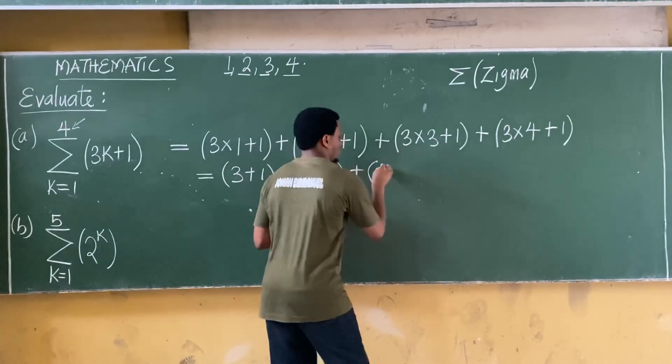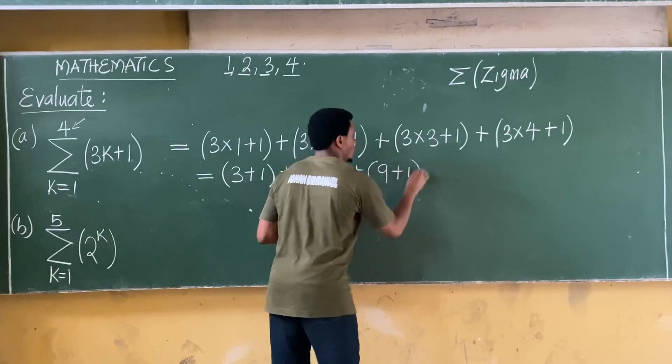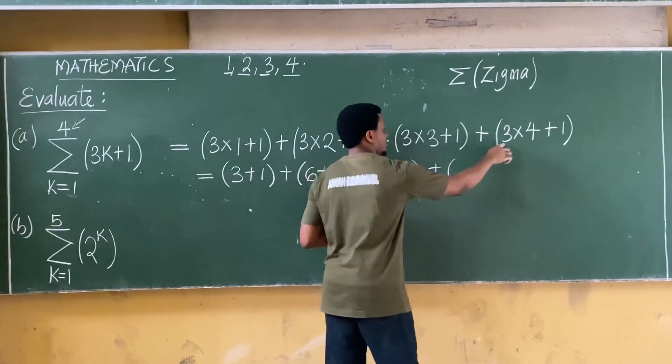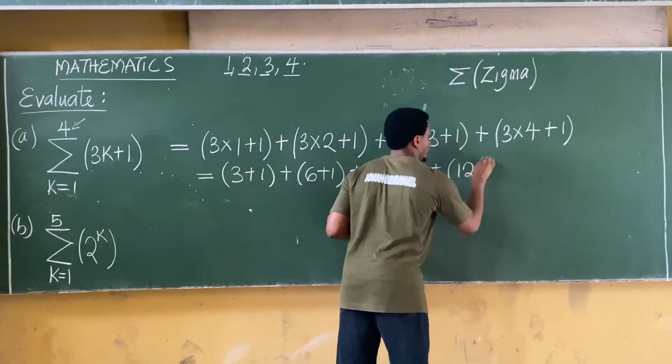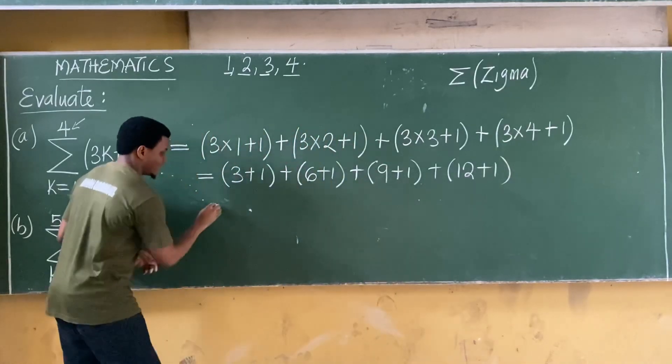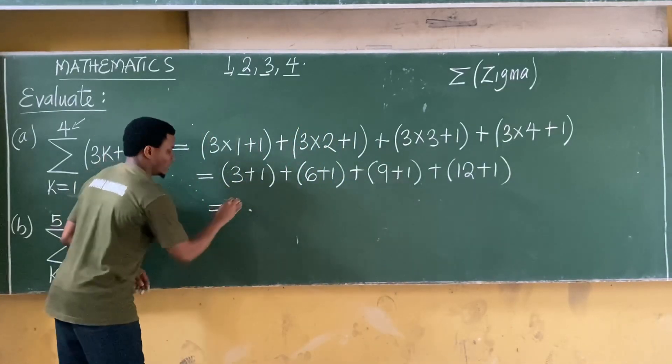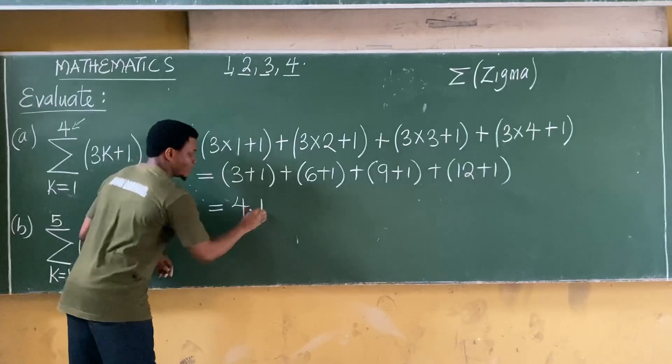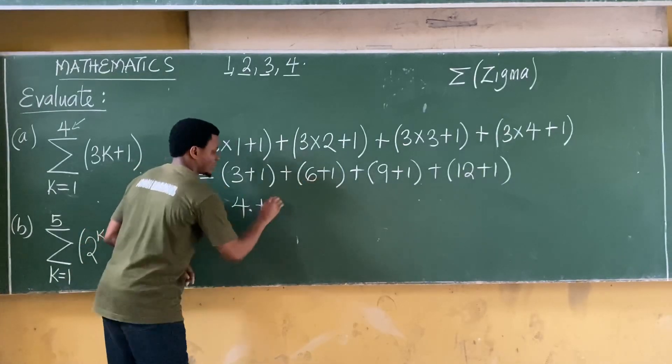Plus three times three is nine plus one, plus three times four is twelve plus one. So I have this. Let's simplify further. This is equal to three plus one is four, plus six plus one is seven.